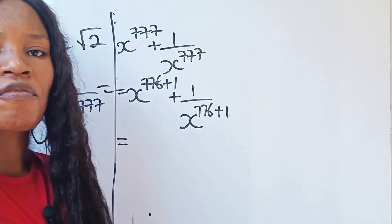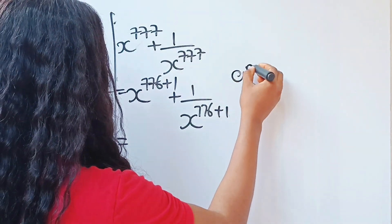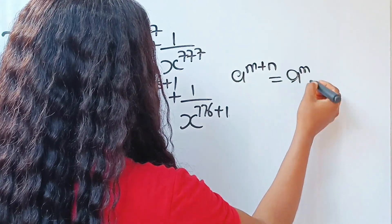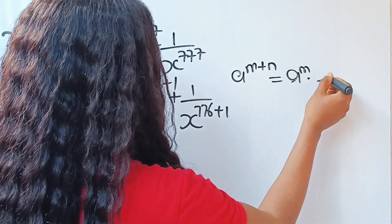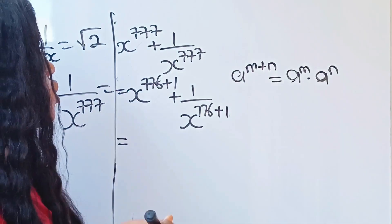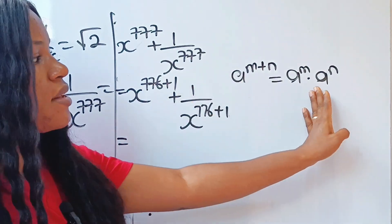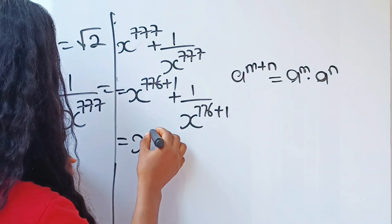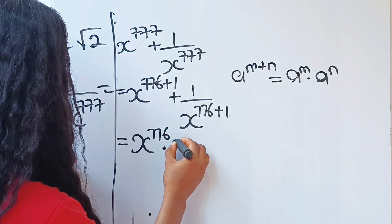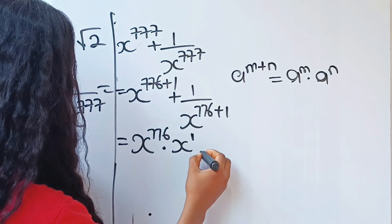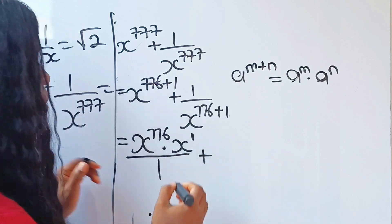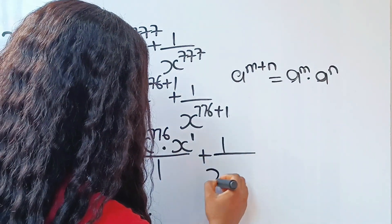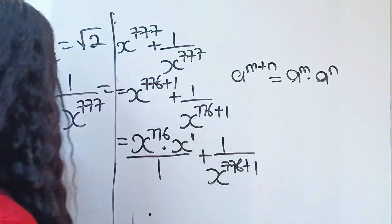According to the law of indices, when you have a to the power of m plus n, this is equal to a to the power of m multiplied by a to the power of n. This expression is already in that form, so let's write it out: x to the power of 776 multiplied by x to the power of 1, plus 1 over x to the power of 776 plus 1.